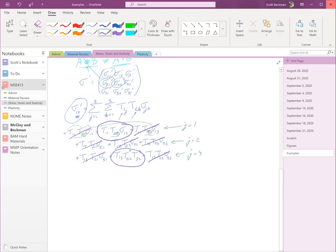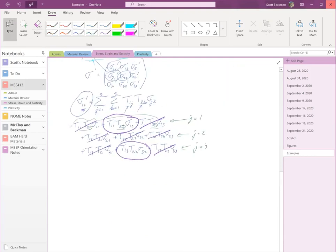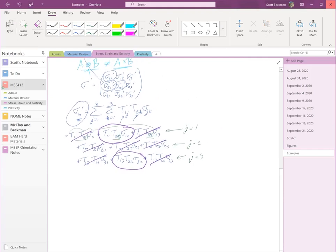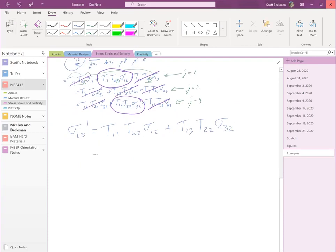That should be a sigma, not a t. Which means that sigma 1, 2 prime is equal to t11, t22, sigma 1, 2, plus t13, t22, sigma 3, 2. Or cosine 15 multiplied by 1 multiplied by 4 plus minus sine 15 times 1 times 1.